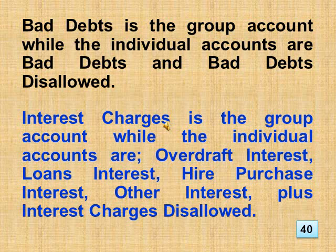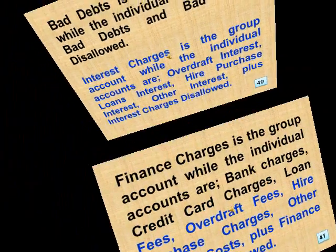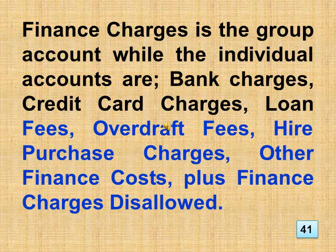Bad debts is the group account. Interest charges is the group account while the individual accounts are: overdraft interest, loans interest, hire purchase interest, other interest, plus interest charges disallowed. Finance charges is the group account while the individual accounts are: bank charges, credit card charges, loan fees, overdraft fees, hire purchase charges, other finance costs, plus finance charges disallowed.